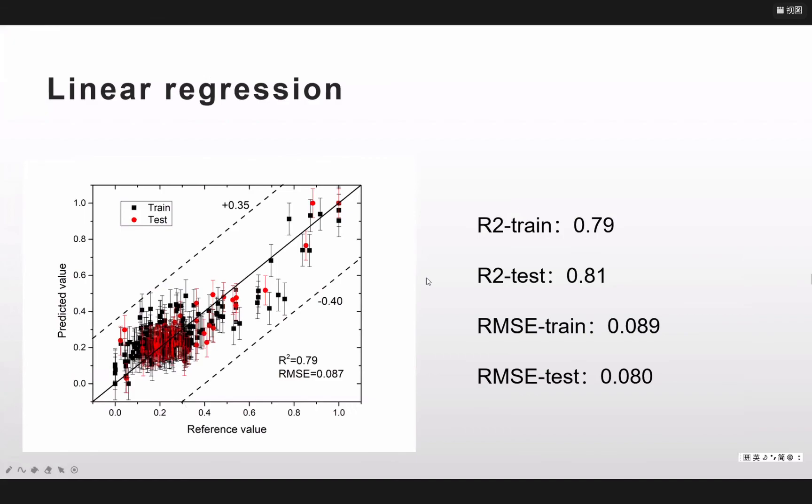Then I use the linear regression. We can see that the horizontal coordinate is the reference value, that's the real value tested by the Mossbauer spectra. The vertical coordinate is the predicted value that is predicted by our models. We can see that those points nearly follow a one-to-one line. It means they fit well. And this is the result, the R-square and the RMSE.